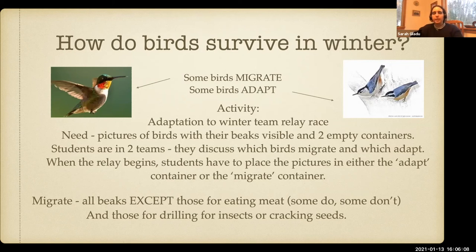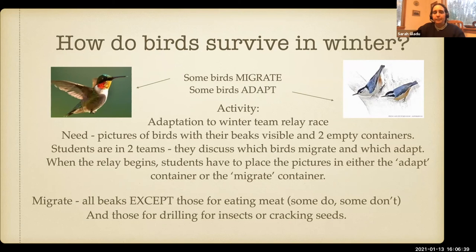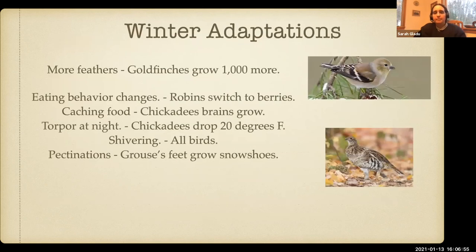The relay race wouldn't work well with very young kids like K through first grade, but you can tweak the idea — for example, a relay race where kids sort pictures into 'birds eating meat' versus 'birds eating seeds.' In terms of birds that adapt to winter, they're pretty extraordinary. Goldfinches grow about a thousand more feathers in winter than in summer. Birds also change their behavior around what they're eating and how they're foraging, depending on species.